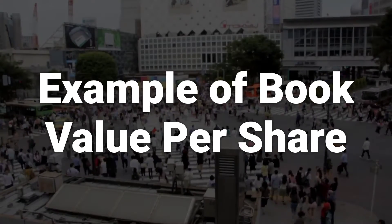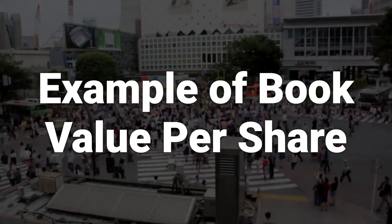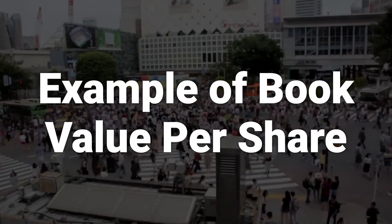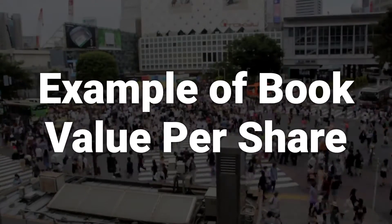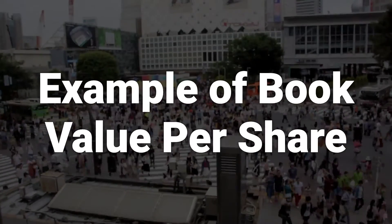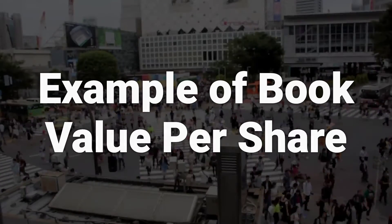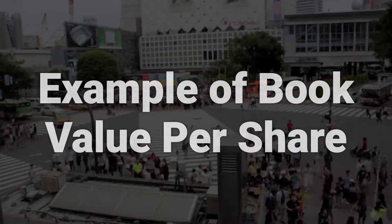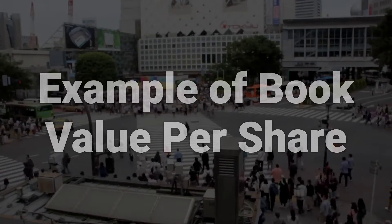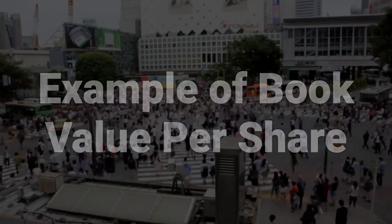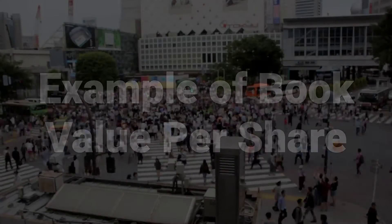Another way to increase BVPS is to repurchase common stock from shareholders. Using the XYZ example, assume that the firm repurchases 200,000 shares of stock and that 800,000 shares remain outstanding. If common equity is $10 million, BVPS increases to $12.50 per share.